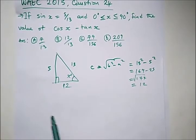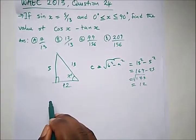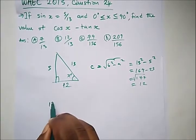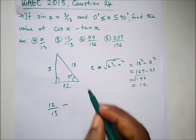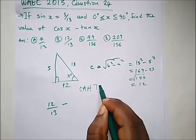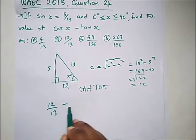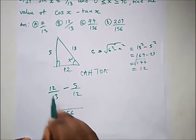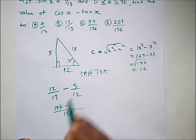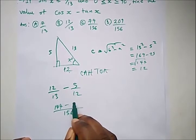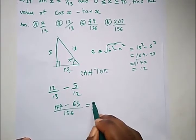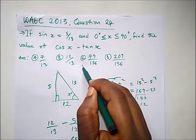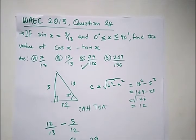The adjacent side is 12. Now cos x is adjacent over hypotenuse, which is 12 over 13. Tan x is opposite over adjacent, which is 5 over 12. So cos x minus tan x equals 12 over 13 minus 5 over 12. The common denominator is 156: (12 times 12) minus (13 times 5) gives 144 minus 65, which is 79 over 156. Our answer is 79 over 156, and the correct option is C.